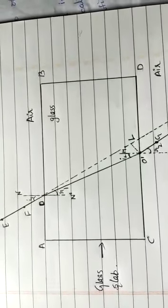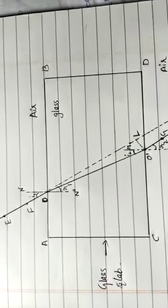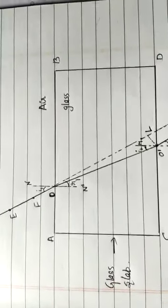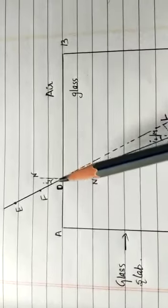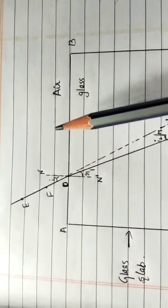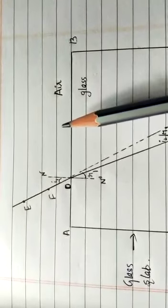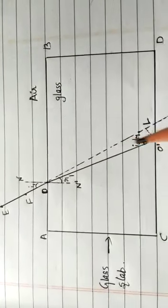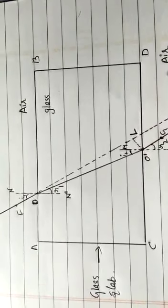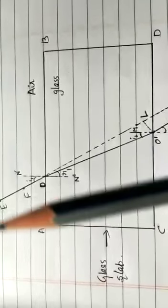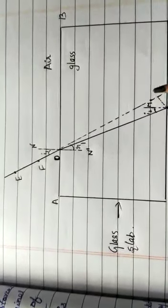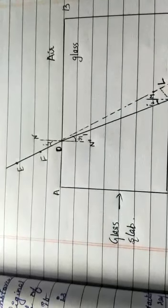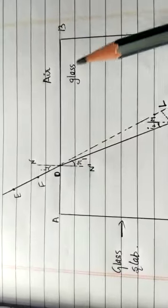This is a diagram for refraction through a rectangular glass slab. In this case, the light ray has changed its direction at the points O and O'. When a light travels from rarer medium to denser medium, or air to glass, and when light travels from glass to air, or denser to rarer medium, the direction of the light ray will change. Note that both points O and O' lie on the surface separating two transparent media — the interface between the two media.